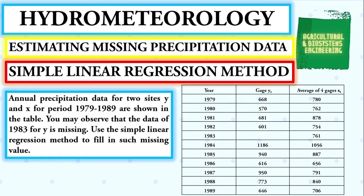Annual precipitation data for two sites, Y and X, for the period 1979 to 1989 are shown in the table. You may observe that the data of 1983 for Y is missing. Use the simple linear regression method to fill in the missing value. In the table, you can see that the data for Y in the year 1983 is missing.